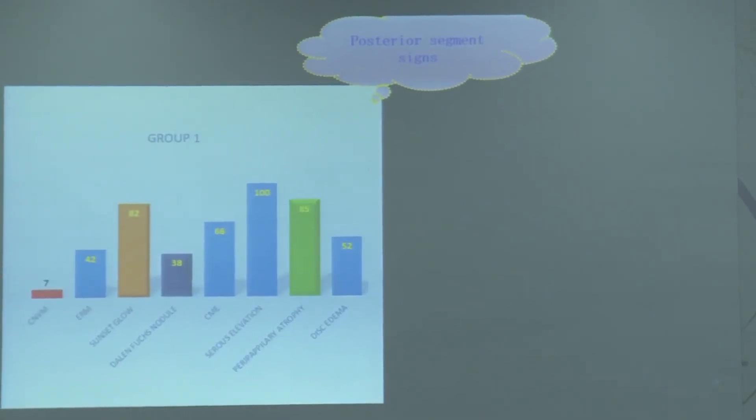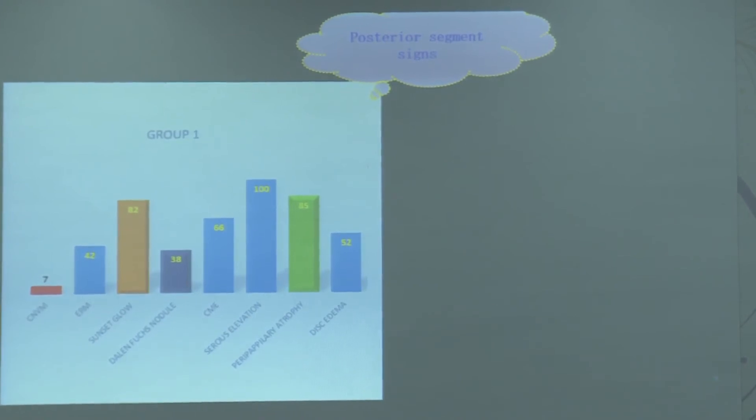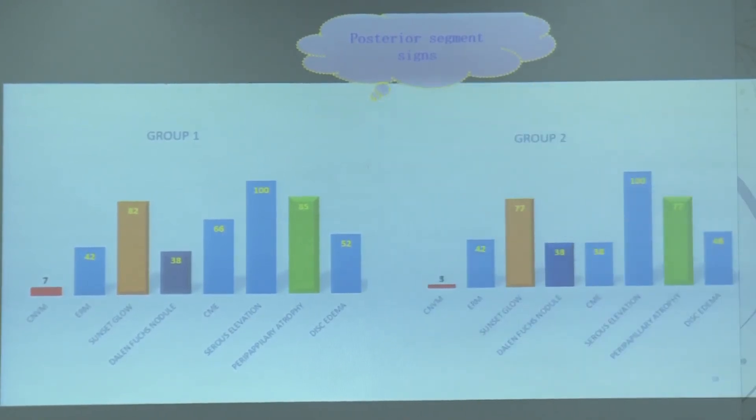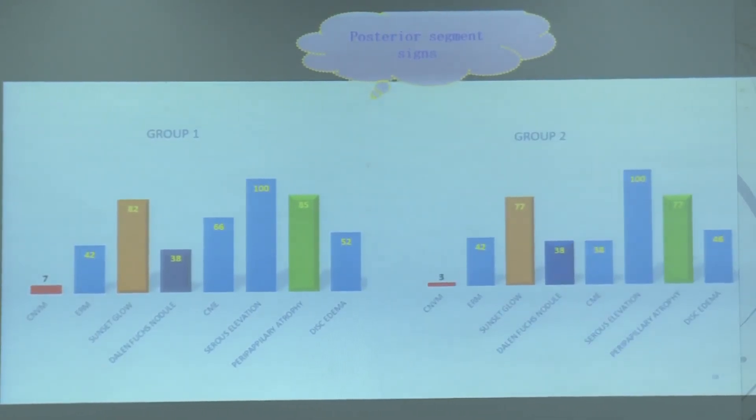The posterior segment signs like CNVM, sunset glow fundus, Dalen-Fuchs nodules, and peripapillary atrophy were much higher in Group 1 as compared to Group 2 of our study.